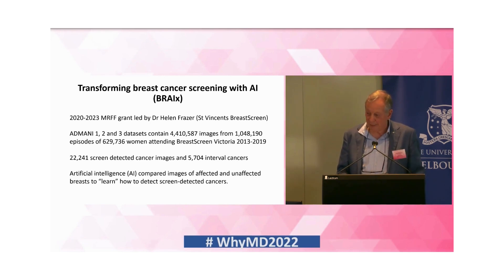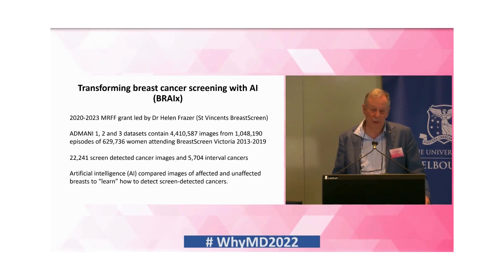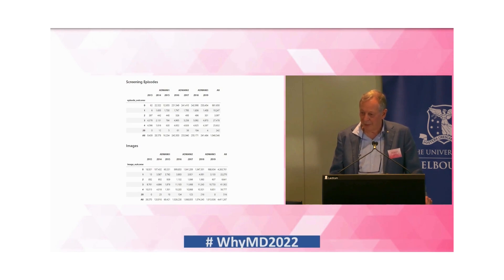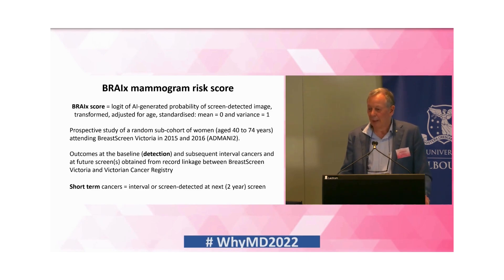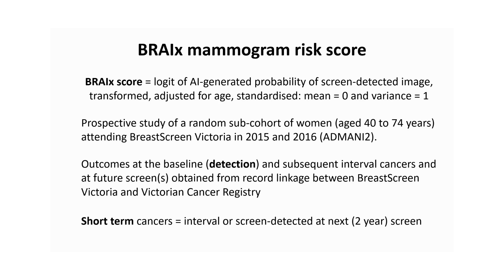This dataset consists of 4 million images from over a million episodes from over half a million women attending BreastScreen over the last decade — an incredible resource that Helen and BreastScreen Victoria have put together. What we've created is what we call the Breast Mammogram Score, devised from what the AI has learned. The AI learns a probability — that's what's behind the Transpara scores of one to nine, which were approximately deciles.